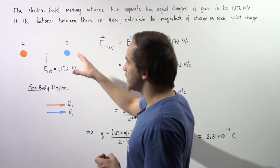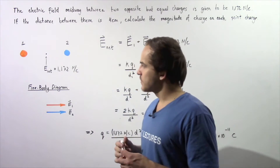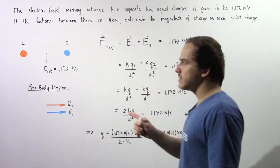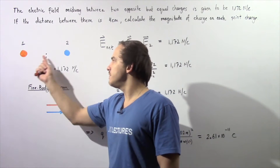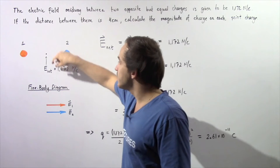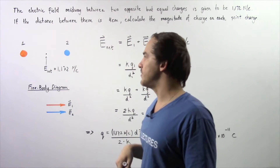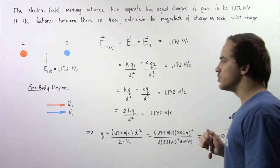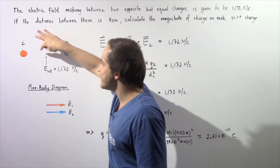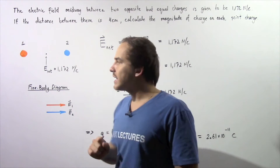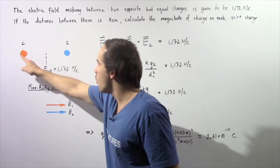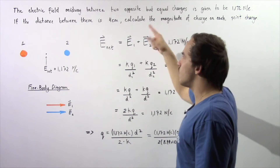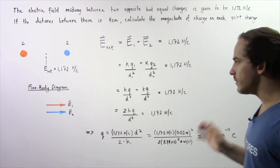Let's begin by looking at the following diagram. We have point charge number one and point charge number two. The distance between these two point charges is given to be 4 centimeters, and the net electric field midway between them is 1172 N per Coulomb. Because this point is midway, the distance from it to either point charge is exactly the same — half of 4 cm, or simply 2 centimeters.